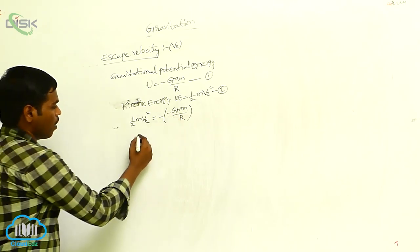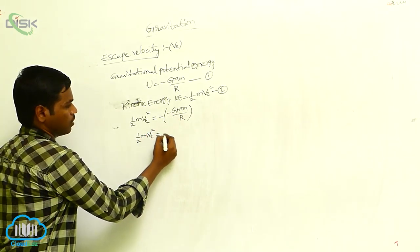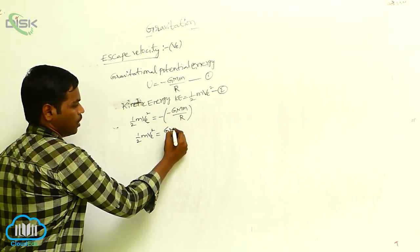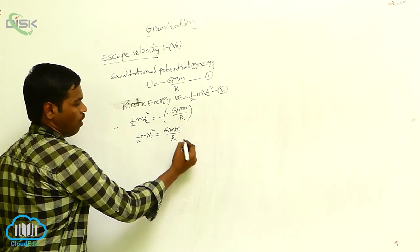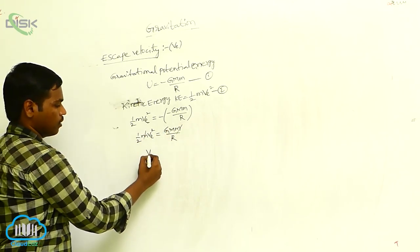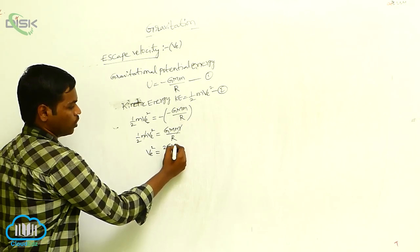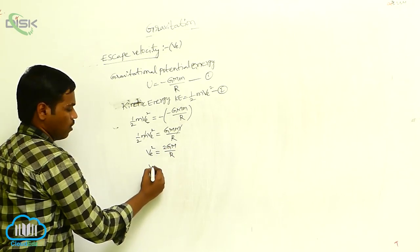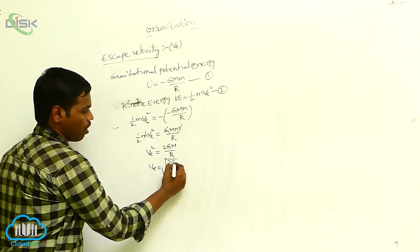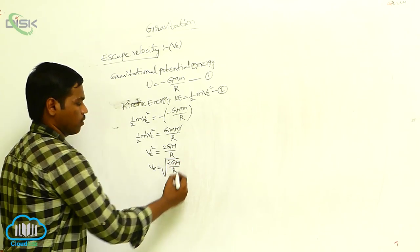Half m Ve squared is equal to minus into minus, that is GMm by R. Here M and m get cancelled. Then Ve squared is equal to 2GM by R, and Ve is equal to the square root of 2GM by R.